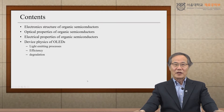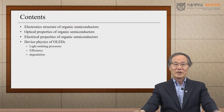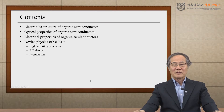There are three short lectures. In the first lecture, I will discuss the electronic structure followed by optical properties of organic semiconductors. In the second part, I will discuss the electrical properties of organic semiconductors. Lastly, I will introduce you to the device physics of OLED, including the light-emitting processes, efficiency, and degradation.